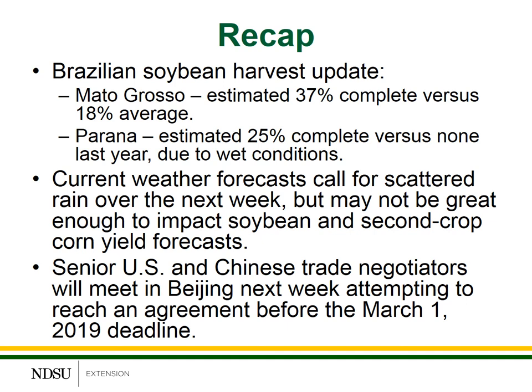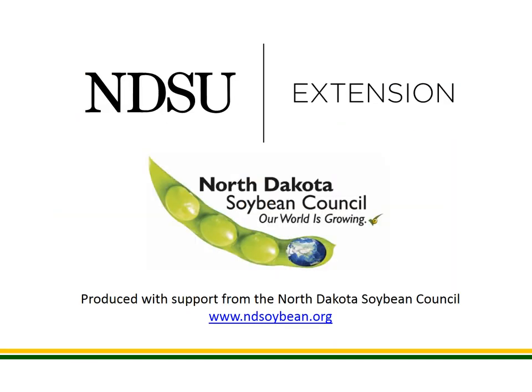When we look at the short-term weather forecast, there is some scattered rains forecasted for next week, but it may not be enough to really impact both soybean yields and second crop corn yield forecasts — we'll just have to wait and see. On a final note, senior U.S. and Chinese trade officials will meet in Beijing next week trying to reach an agreement before the big March 1, 2019 deadline, when U.S. tariffs on Chinese goods will increase one more time. So we'll have to be watching for any updates coming from those negotiations. This completes this week's update — please feel free to call or email if you have any additional questions, and thank you for listening.